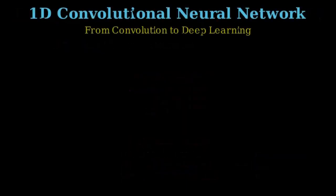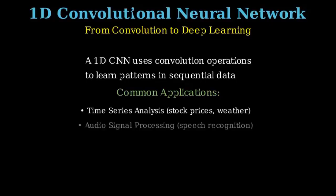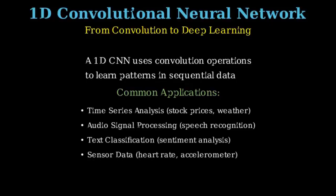So let's understand what could be done with the 1D convolutional neural network. It uses a convolution operation, that's why it's called a convolutional neural network. It learns patterns in sequential data, and these are the common applications: time series analysis, audio signal processing, text classification, and sensor data analysis.